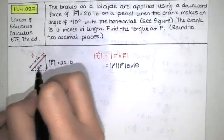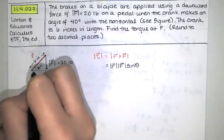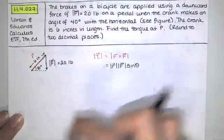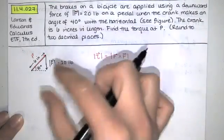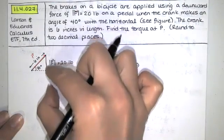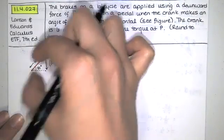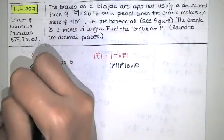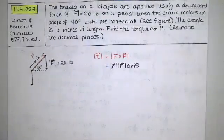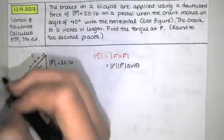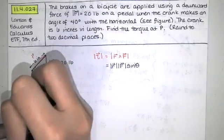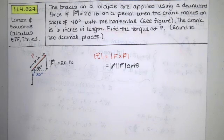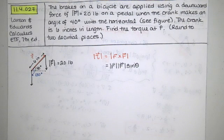If this angle is 40 degrees and the force is being applied here, in order to find the angle between the two vectors I have to pick up the force vector and place it at the same point. In that case I can see that the angle between these two vectors is actually 130 degrees — it's 40 degrees plus 90.